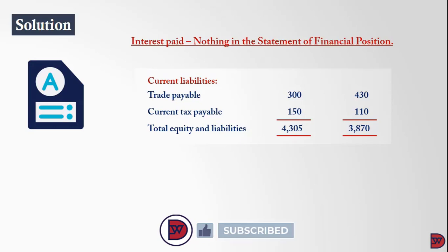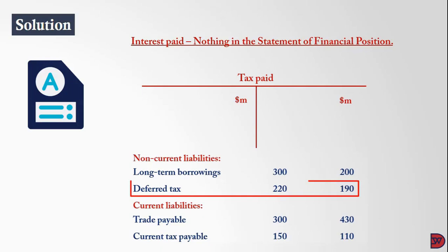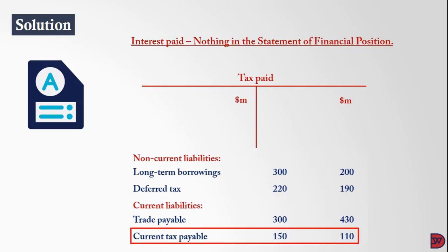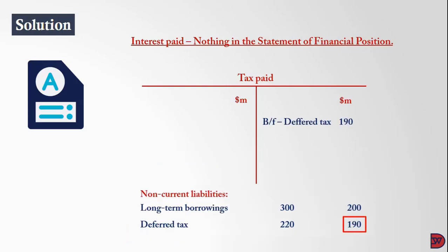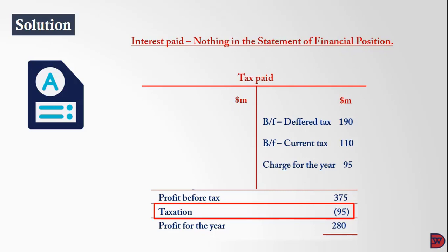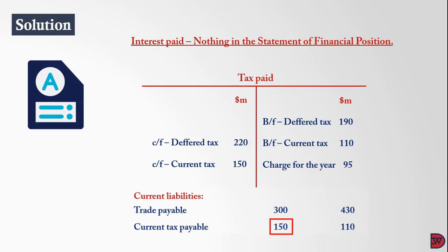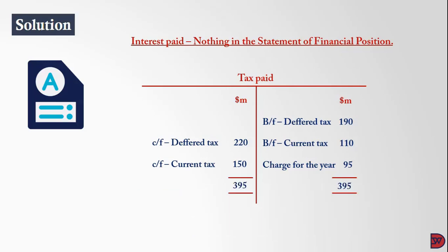For interest paid: since there is nothing in the statement of financial position for interest payable, the amount has been fully paid. If it were unpaid, it would appear in the current liabilities. For tax paid: we use the deferred tax opening of 190 million plus current tax payable opening of 110 million, plus tax for the year of 95 million, giving 395 million. The closing balances are 224 million deferred tax and 150 million current tax, totalling 374 million. This means 25 million dollars was paid off.